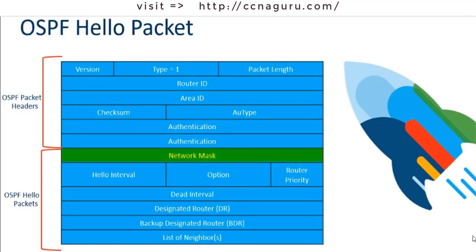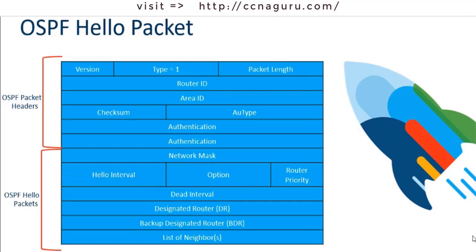The Network Mask field is the subnet mask associated with the sending interface. The Hello Interval specifies the frequency in seconds at which the router sends Hello packets — the default on multi-access networks is 10 seconds. The Router Priority is used in the DR and BDR election; the default priority for all OSPF routers is 1, but it can be manually changed with values from 0 to 255 — the higher the value, the better the chance of becoming the designated router.